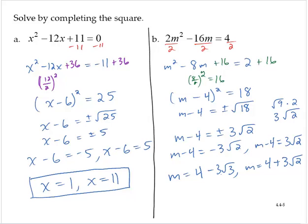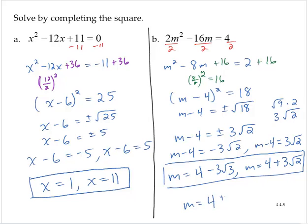Do not try to combine the 4 and the negative 3 times the square root of 2. They are not like radical terms and so they cannot be combined. Often you will see this expressed as m equals 4 plus or minus 3 times the square root of 2.